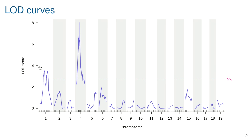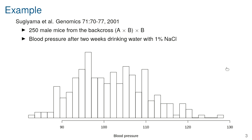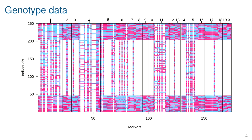We want to put them together and build a multiple QTL model. The example I'm talking about today is one of my favorites — data on 250 male mice from a backcross between the A and B strains, crossed back to the B strain. We have blood pressure measured two weeks after drinking high-salt water. For each of the 250 mice we have this measure of blood pressure and genotypes across the genome.